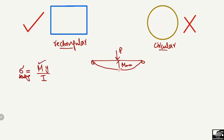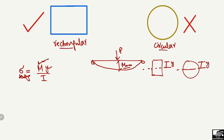For example, if we want to find the stresses at the midpoint, we use the maximum moment value M at that point. Y is the distance from the neutral axis to the point where you want to find the stresses — this applies to both rectangular and circular sections. I is the moment of inertia.